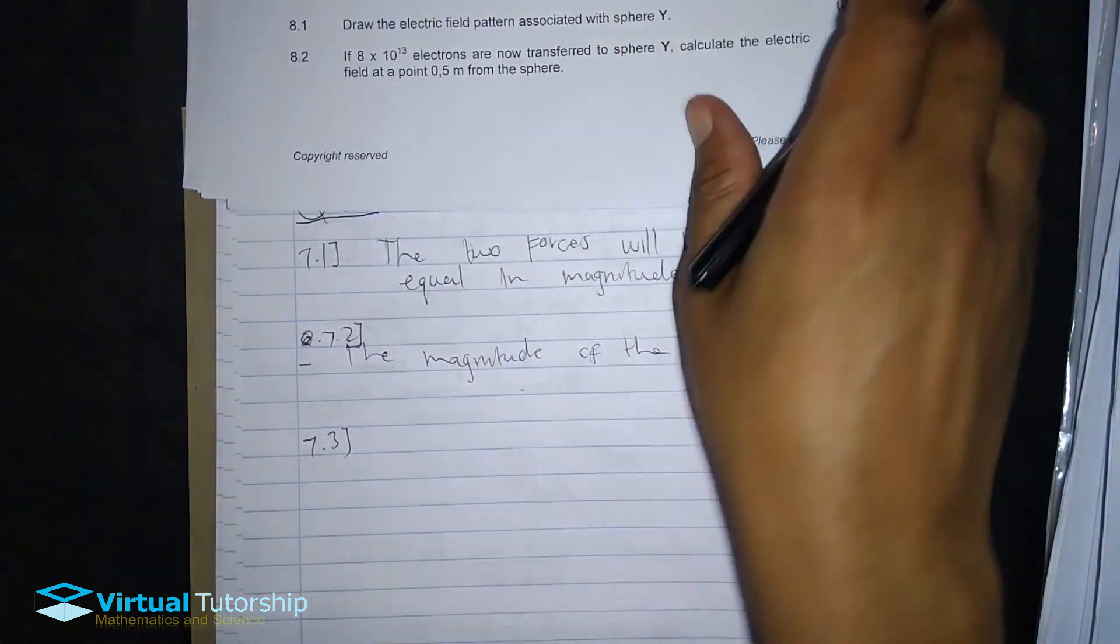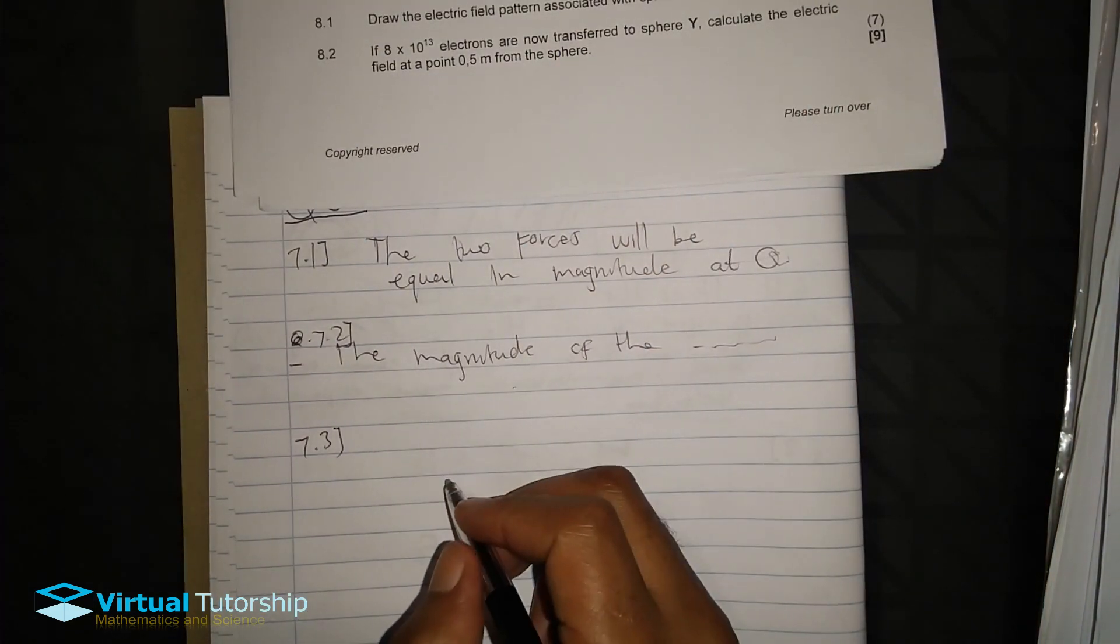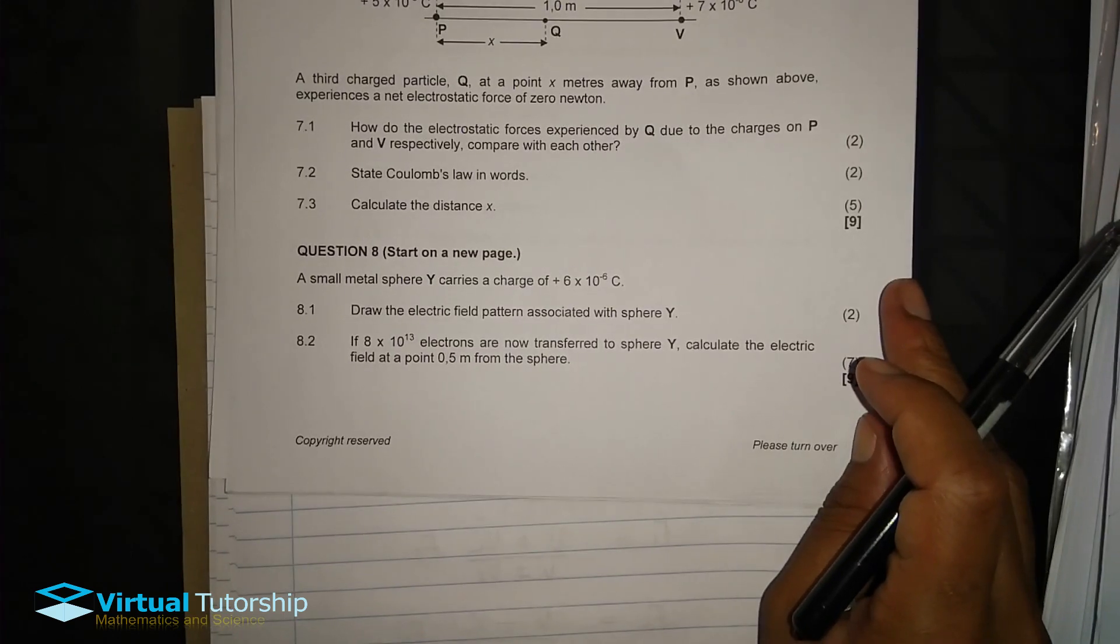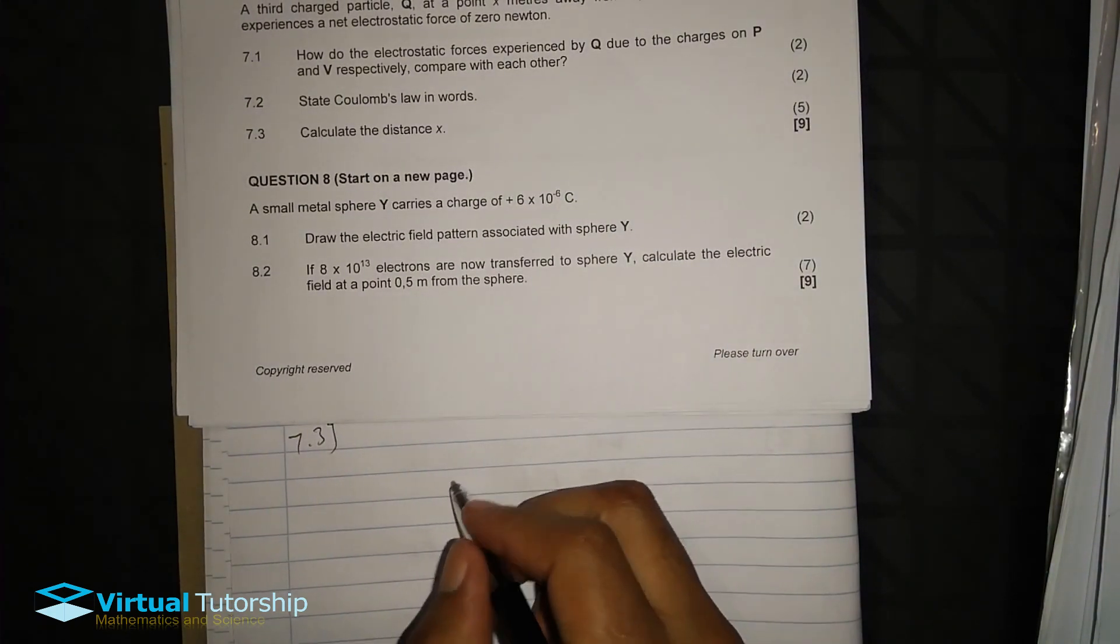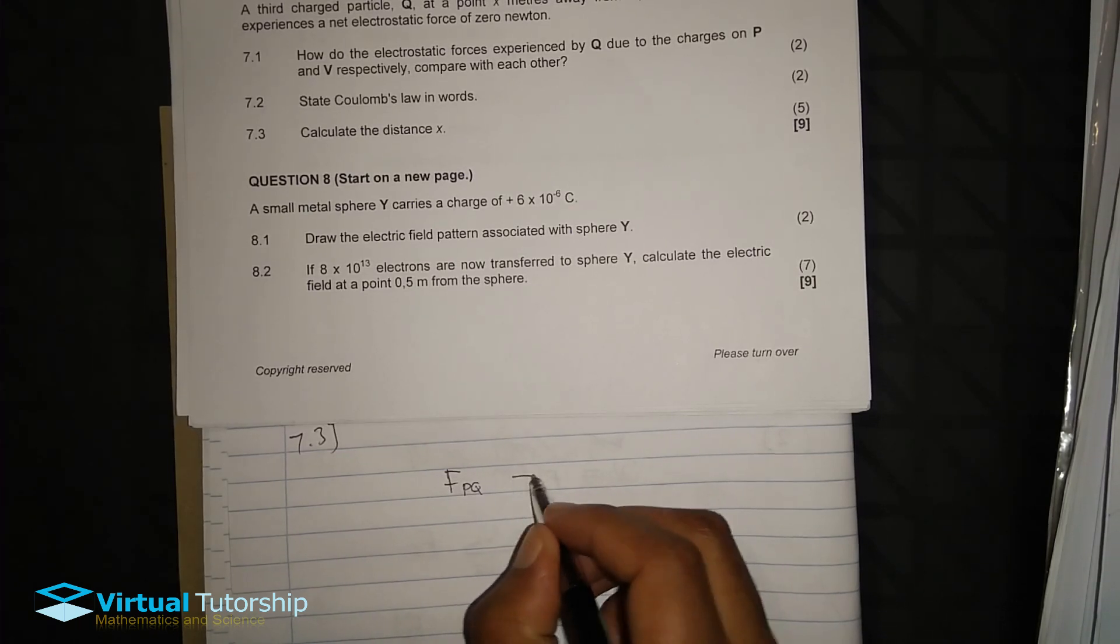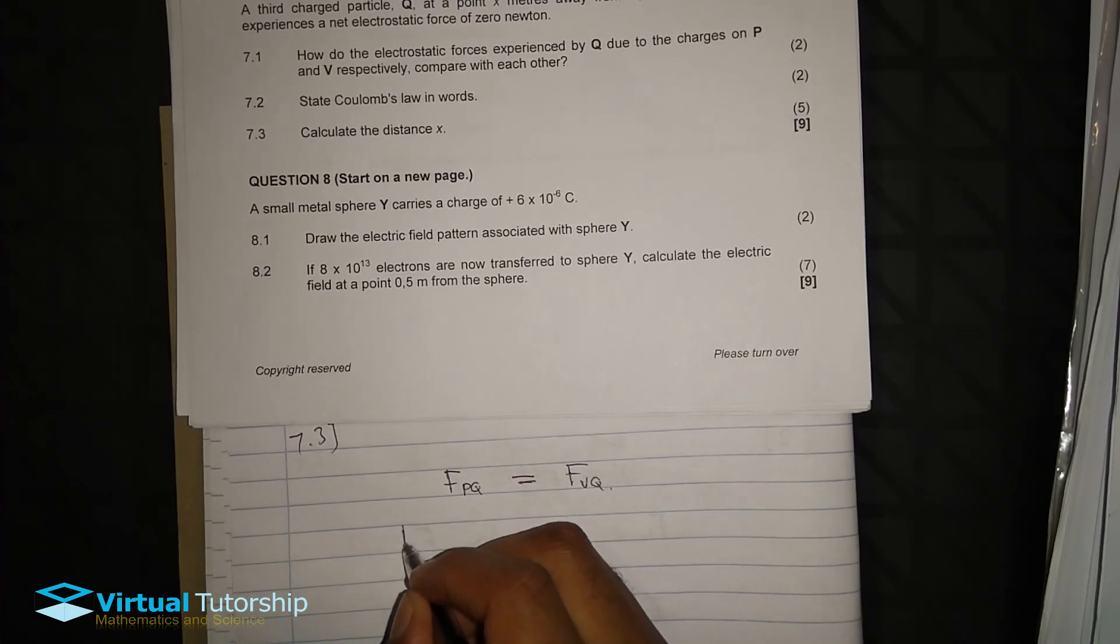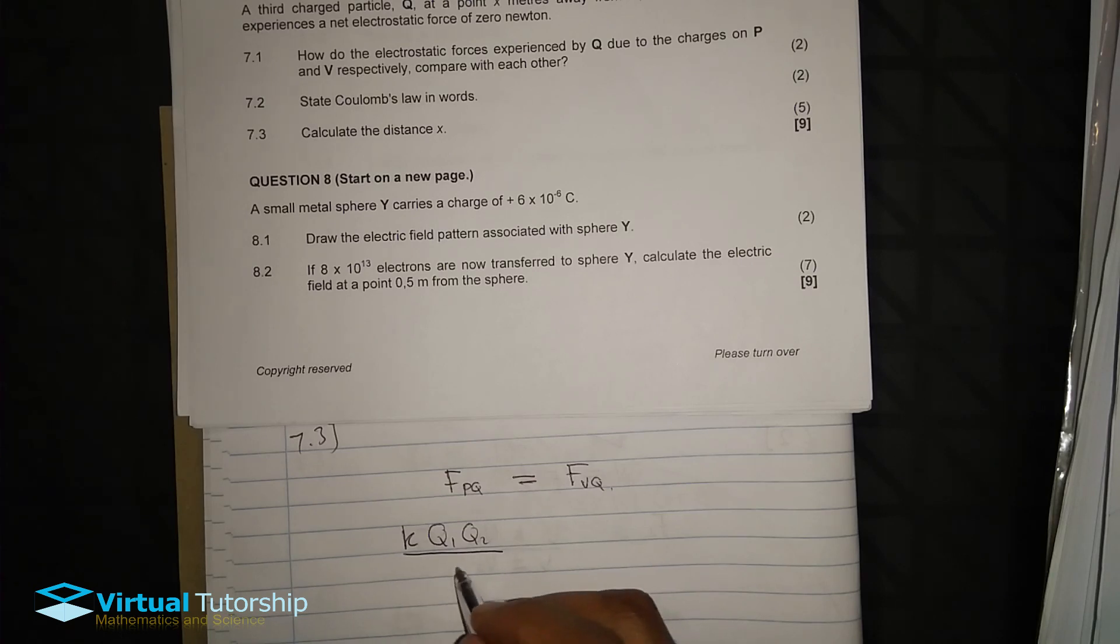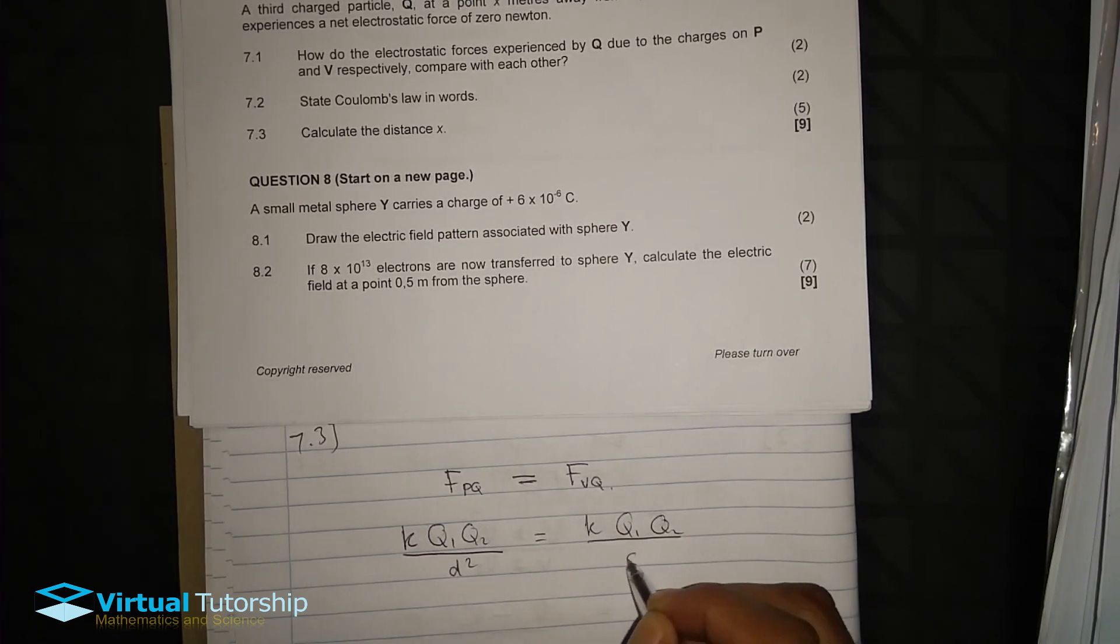7.1 we compared between them. So the two forces will be equal in magnitude, right? Equal in magnitude. So in order to calculate X, I need to set up an equation. In other words, this is where I derive from the equation. F_P on Q is equal to F_V on Q. The forces are equal. So we have k times Q1 Q2 over D squared equal to k Q1 Q2 divided by D squared.